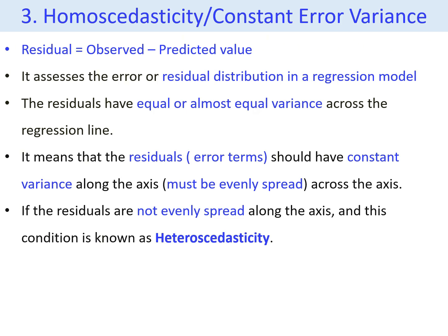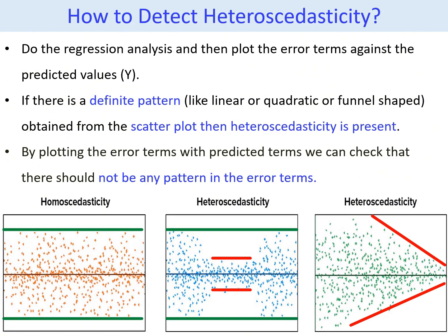In simple terms, homoscedasticity indicates that the residuals, or error terms, should exhibit a consistent variance — evenly distributed across the axis. If the residuals are not evenly spread, it indicates a problem of heteroscedasticity. In the first figure, we can see that the residuals are evenly distributed along the axis, indicating constant error variance, so there is no issue of heteroscedasticity. However, in the second and third figures, some patterns in the residuals can be observed along the axis, suggesting that heteroscedasticity is present in our data. This is a graphical method for detecting heteroscedasticity.